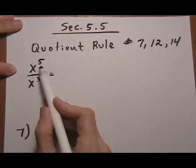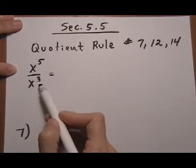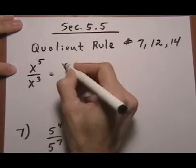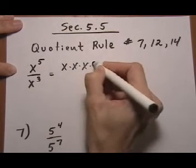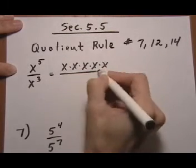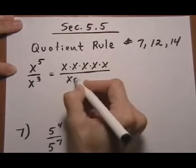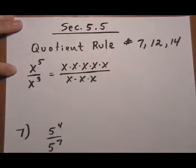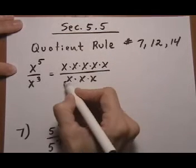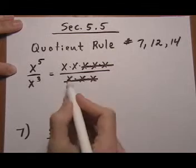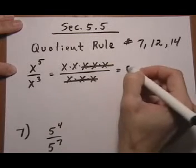If you look at this problem here, we have x to the fifth over x cubed. Well, if we expand this to be no exponents, so we have five x's being multiplied, and then the x cubed expands to x times x times x, then you'll notice that three x's on the bottom can cancel with three on top, and we're left with two x's, or x squared.